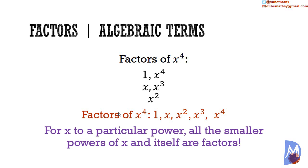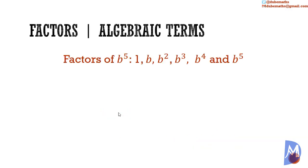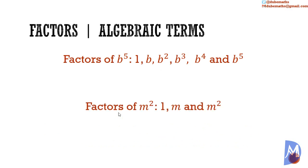For knowledge, we know that the factors of b to the fifth power are 1, b, b squared, b to the third power, b to the fourth power, and b to the fifth power. Similarly, we know that the factors of m squared are 1, m, and m squared.